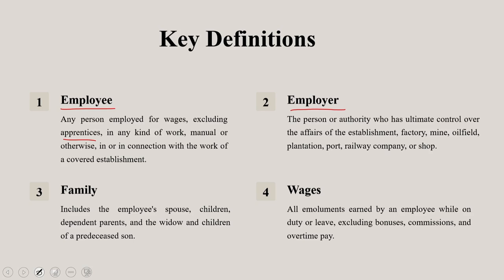There is a third dimension: in any other case — not the government, not the local authority — the person or authority which has ultimate control over the affairs of the establishment, factory, oil field, port, plantation, mine, shop, or railway company; and where the said affairs are entrusted to any other person, whether called a manager, managing director, or by any other name, such a person shall denote employer. So there are three different dimensions of employer under this act.